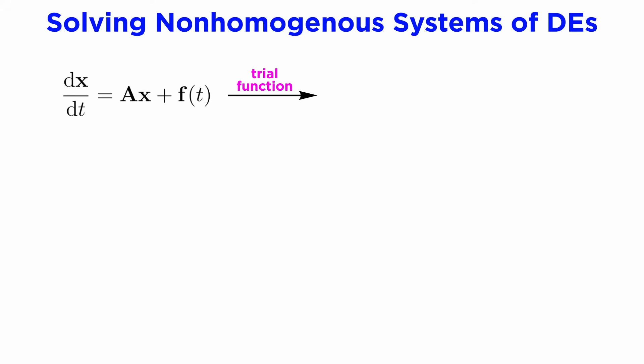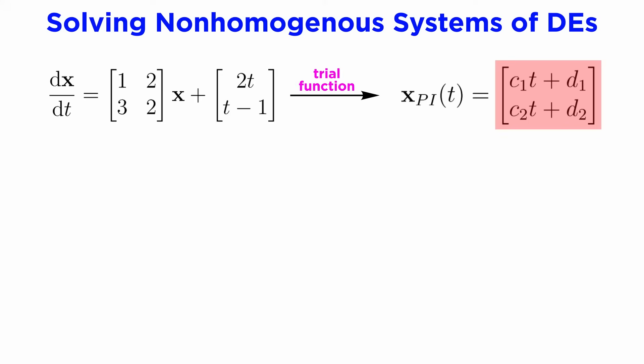The method of undetermined coefficients approach is pretty much identical to what we already know. We choose a trial function based on the form of f, and then substitute it in with some multiplier coefficients to be solved for. For example, if we have the following system where the f of t term contains linear polynomials in t, then our trial function will also be a linear polynomial in t. The only difference is that this time those unknown coefficients will be vectors instead of scalars.